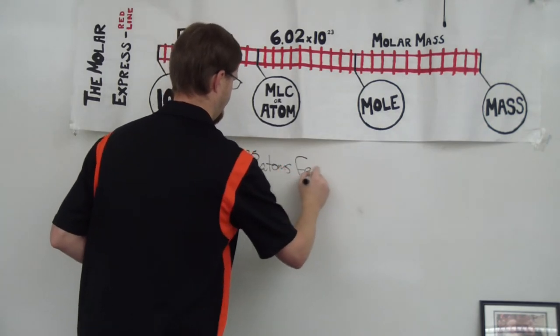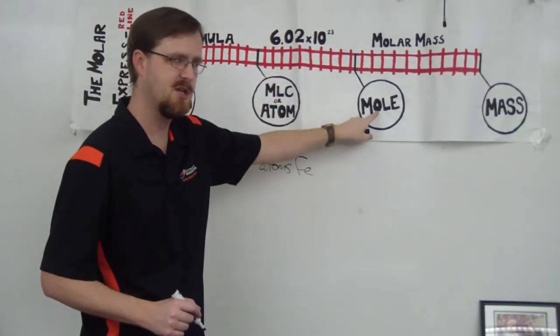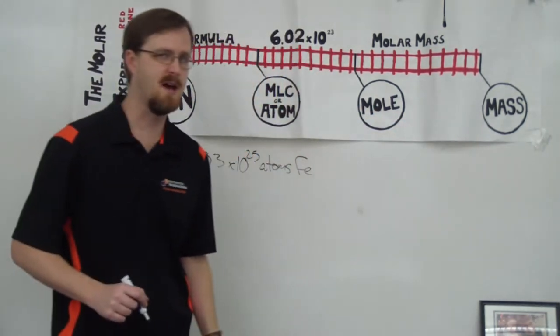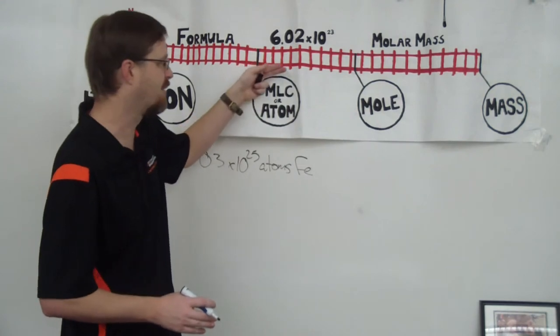Alright, let's say that you are given, I don't know, I'm totally making this up, 2.03 times 10 to the 25th atoms of iron. And I want to know how many grams that is. Okay, so that means we're starting here at atoms. What we're looking for is grams. Notice, there is a station in between the two. So we cannot go from atoms to grams in one step, no matter how much we want to. Because the train requires us to go through that mole station before we can get to grams.